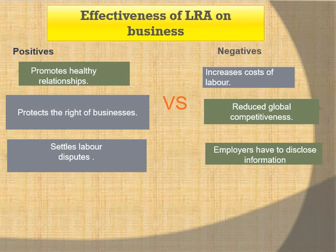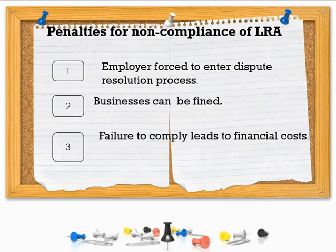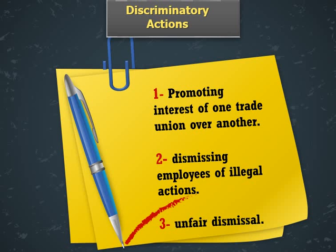Employees may not get a court interdict to stop a strike. These are just some of the negative impacts that the LRA has on businesses. Moving on to the penalties for non-compliance: employers are forced to enter dispute resolution processes. So even if you feel as an employer that you didn't do anything wrong, if the employee takes you to the CCMA — the Commission for Conciliation, Mediation and Arbitration — you are forced to enter into this dispute resolution. Businesses can be fined if they don't comply with the Labour Relations Act, and if you don't comply there are often heavy financial costs attached to it.